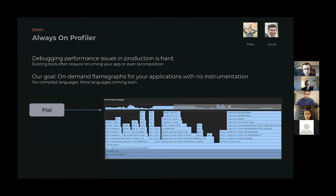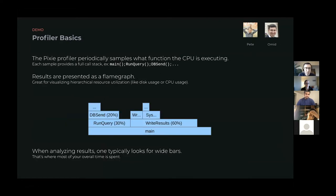The basic idea behind the profiler is: you're looking at your pod in Pixie, you have all the other information about your pod — request throughput, latency, all the great metrics we give you — but wouldn't it be really neat if you could also see exactly what your application is doing? You can actually see these flame charts and see what function your application is spending its time in, where your hot spots are. That's what we're going to show off.